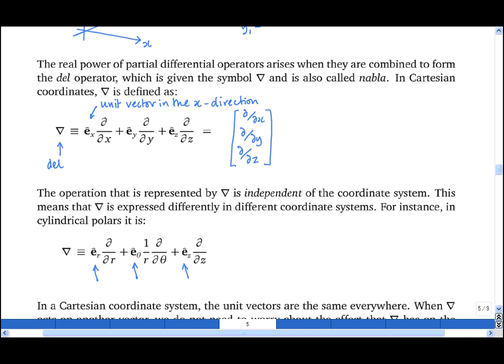And if you're ever wondering where the 1 upon r goes in this expression, just look at the units of the denominators. They all have to have units of distance. And theta, of course, by itself does not have units of distance.